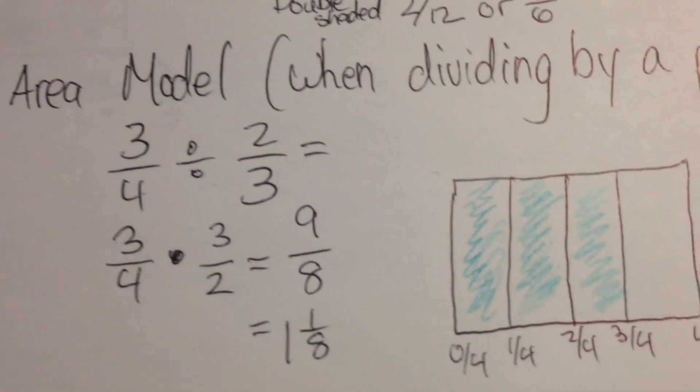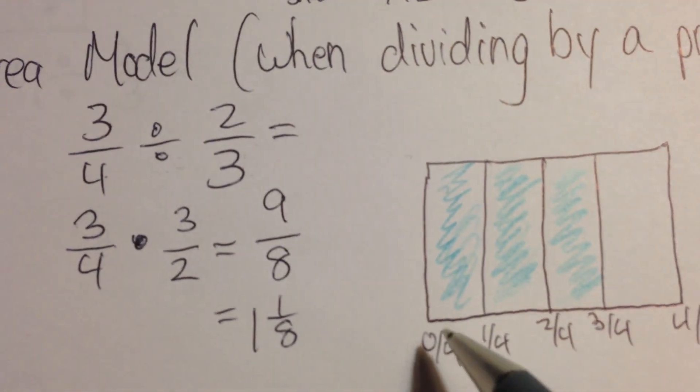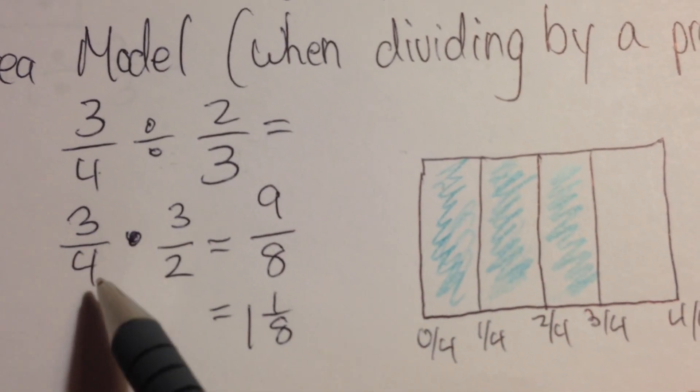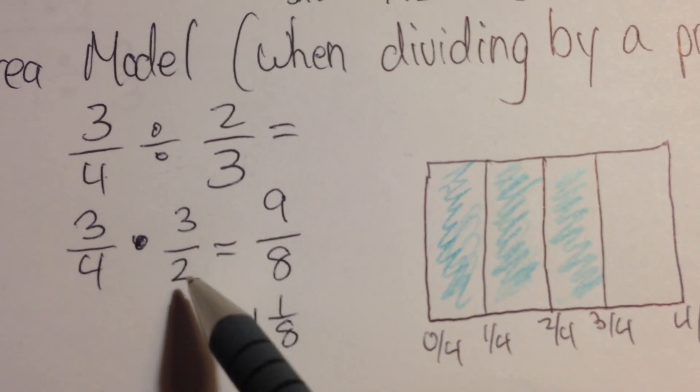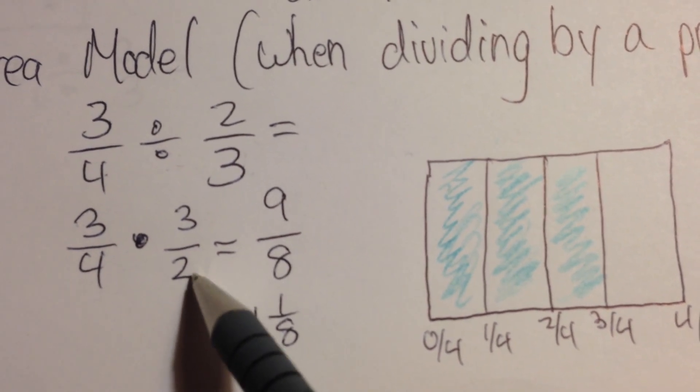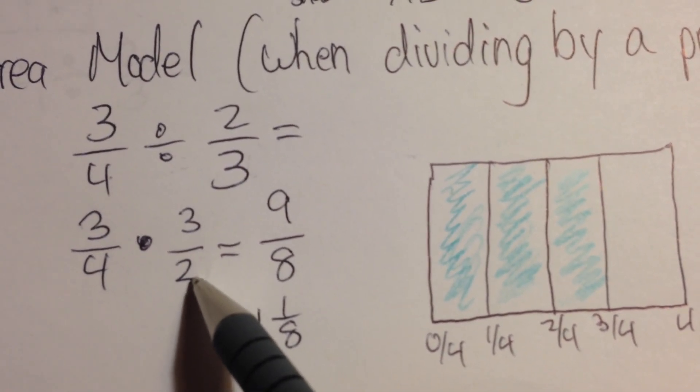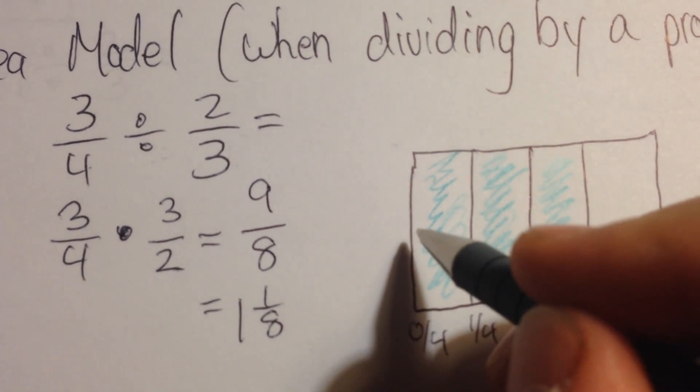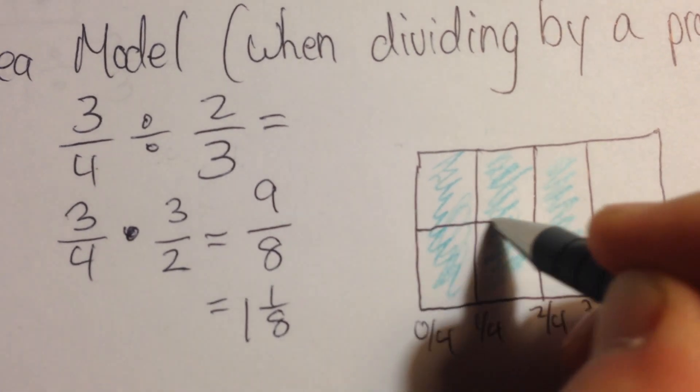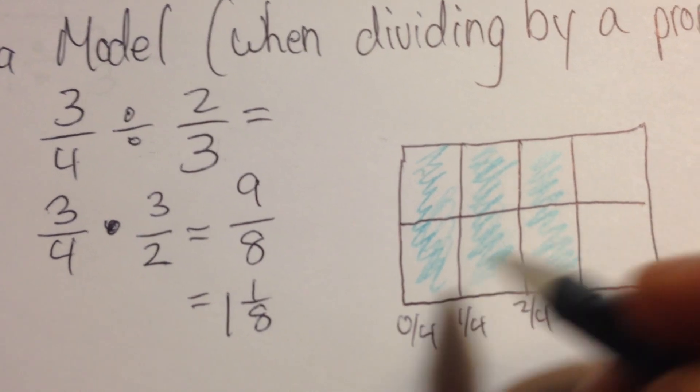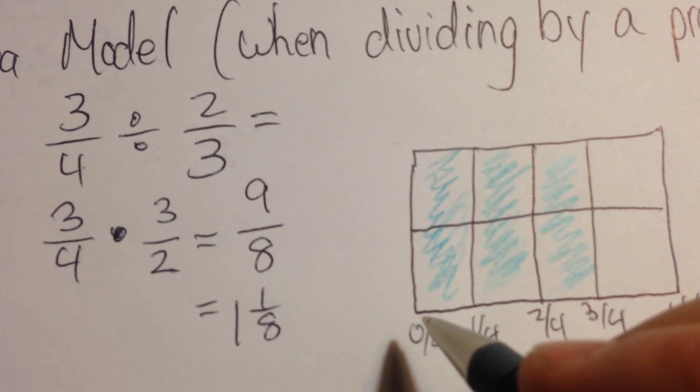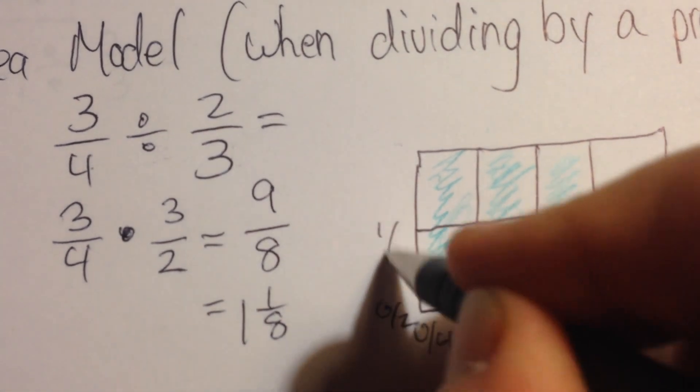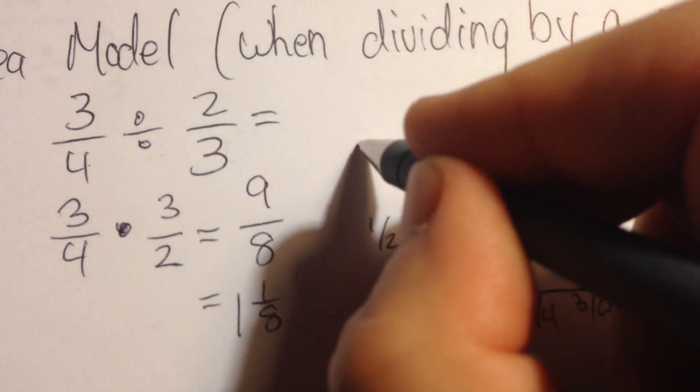What I'm doing now is, since this is an area model, I have to look at the multiplication. I have 3 fourths, and I'm multiplying by 3 halves. The denominator tells me what I'm breaking things into. So I need to break this in halves. I'm going to break it into two pieces, because that's halves. I break it in half. And I need to label this: 0 halves, 1 half, and 2 halves.